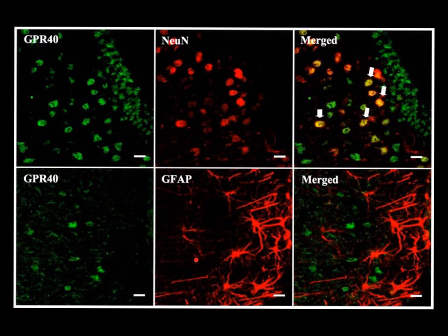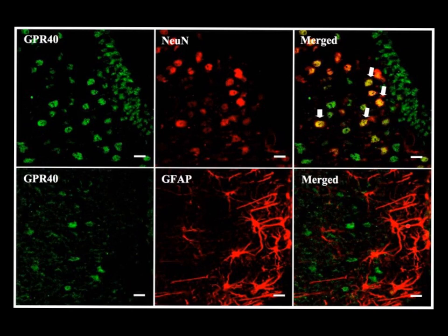Conversely, in tissue double-labeled with the astrocyte marker GFAP — the intermediate filament protein shown in red — when you merge the two images, you see green nuclei positive for GPR40 that do not appear to merge with the GFAP-positive astrocytes. So you can say pretty clearly that this G-protein coupled receptor is not expressed in astrocytes. This study therefore shows co-localization of this receptor with neurons but not with astrocytes, and you can conclude that this receptor is specific for neurons.